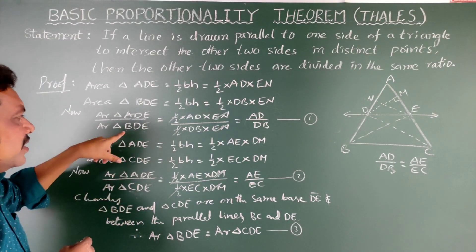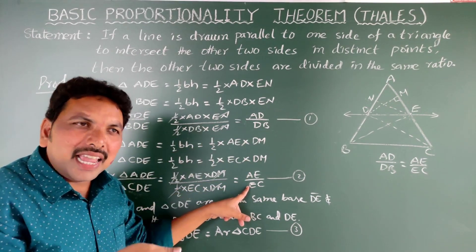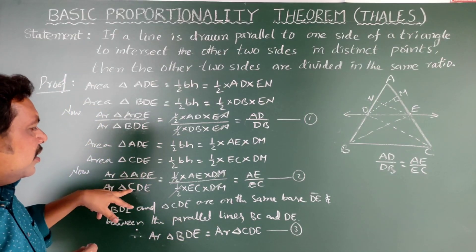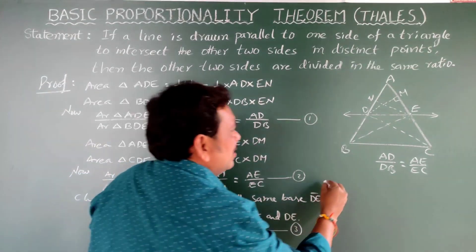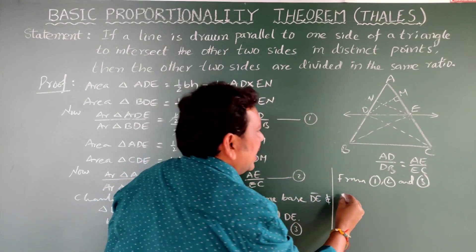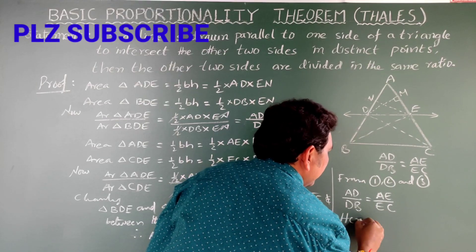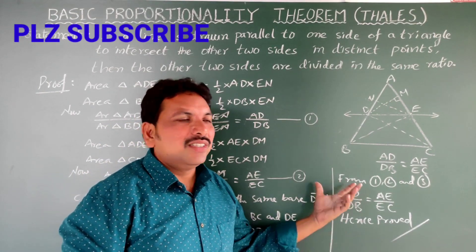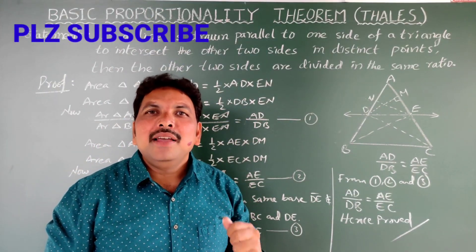From Equations 1, 2, and 3, since Area(BDE) = Area(CDE), substituting in Equation 1 and 2 we can clearly conclude that AD/DB = AE/EC. Hence proved. This is the proof of the Basic Proportionality Theorem, also called Thales' Theorem, simply BPT — very important in 10th class mathematics.